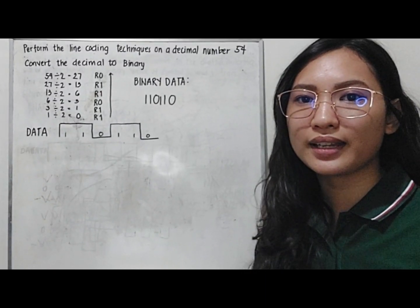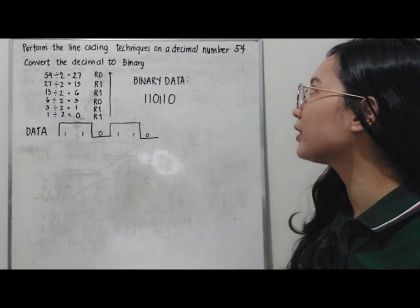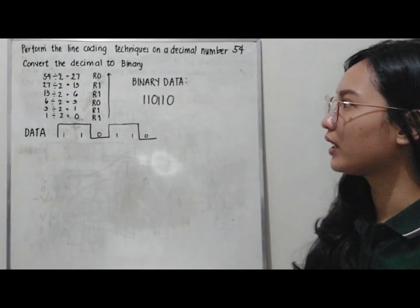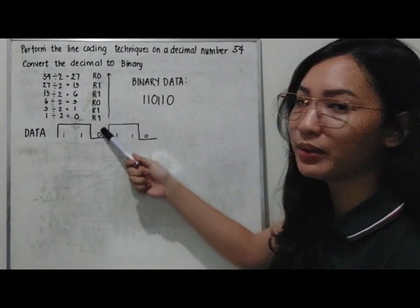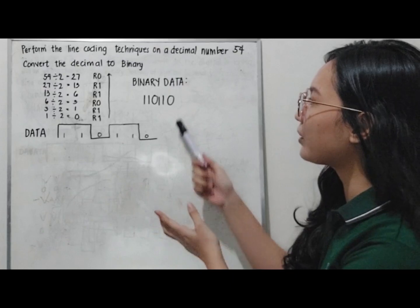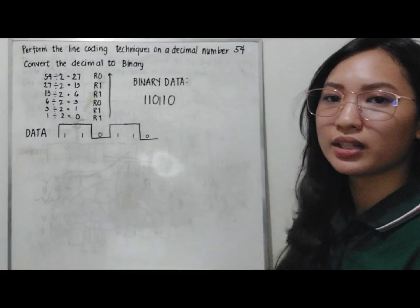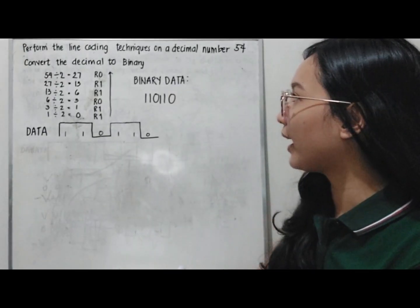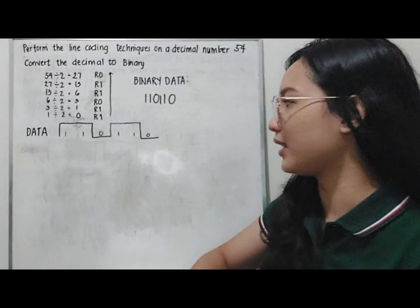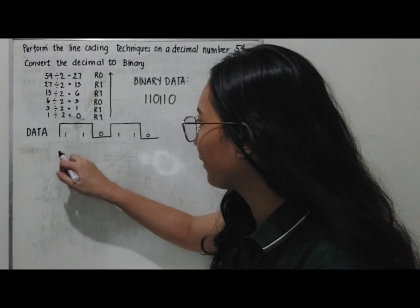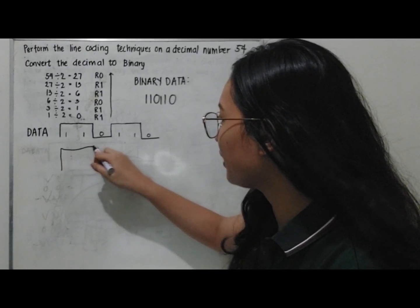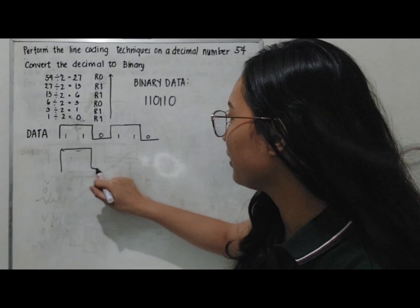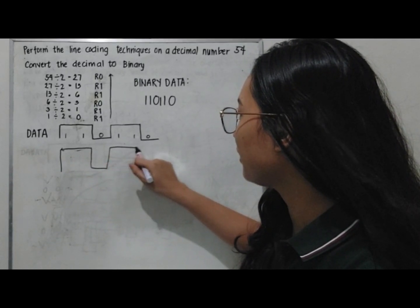For our second example, we perform line coding techniques on the decimal number 54. First, we convert the decimal number into binary by dividing by 2 and recording the remainders. The final binary data is 110110, which gives us the sequence: 1, 1, 0, 1, 1, 0. For the unipolar NRZ: positive, positive, zero, positive, positive, zero. This is the unipolar NRZ.